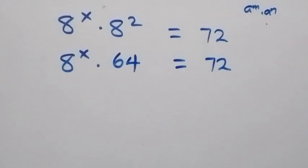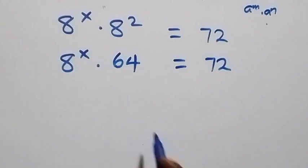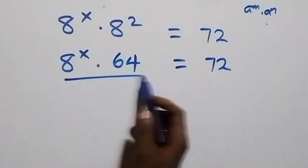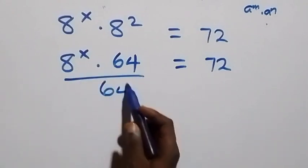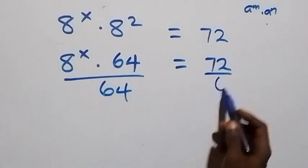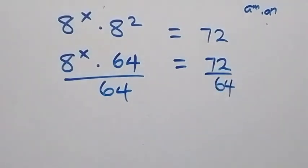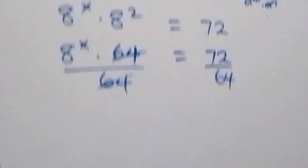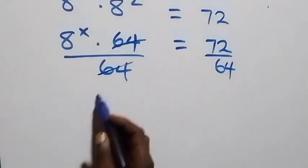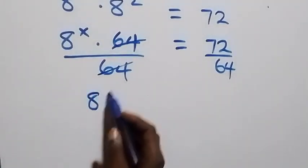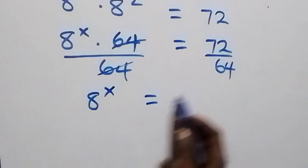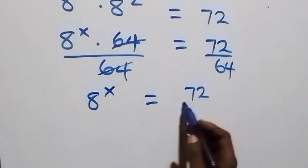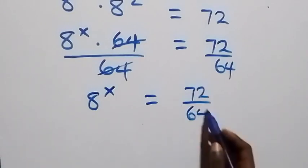From here we can divide both sides by 64 — divide this side by 64 and also divide this side by 64. This implies that on this side 64 cancels, and we are left with 8 raised to power x, which is equal to 72 over 64.